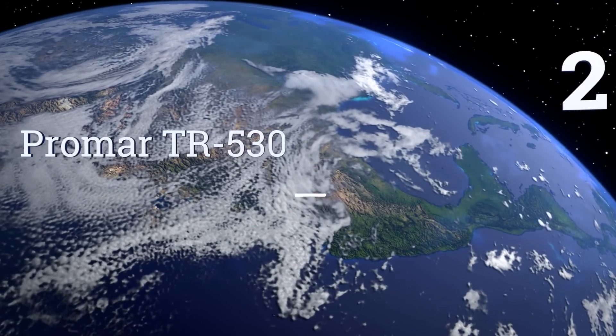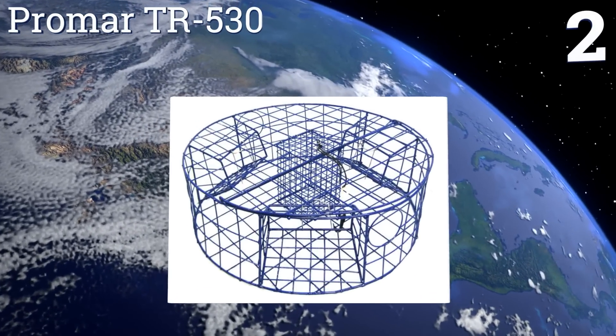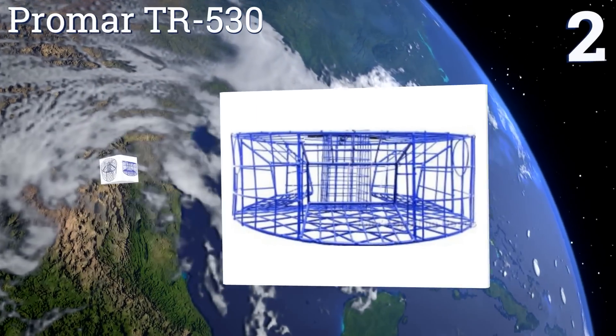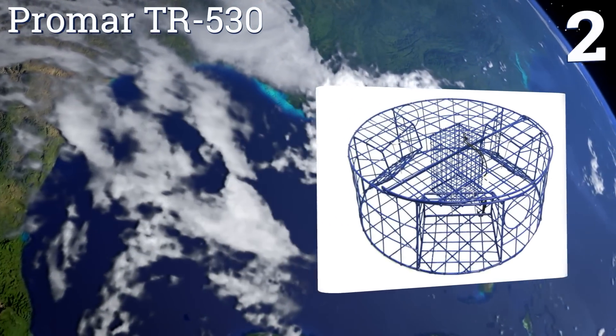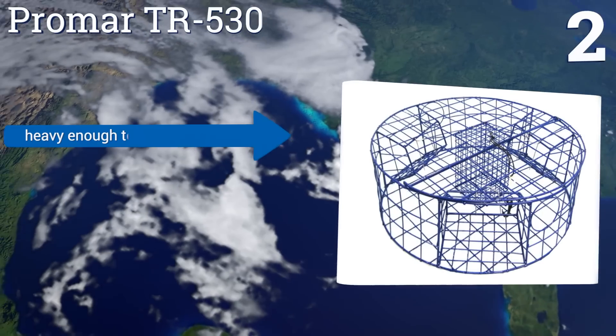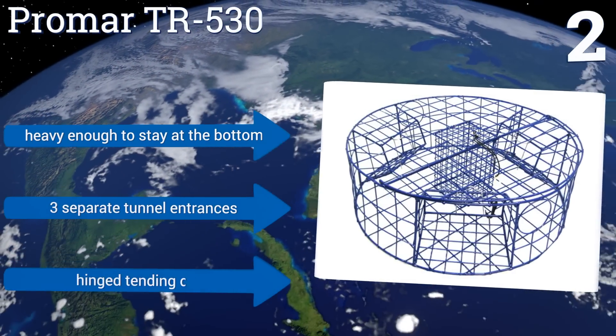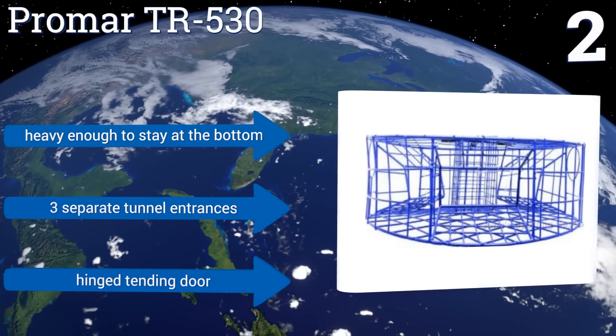At number two, if you're trying to catch Dungeness, the Promar TR530 is a great trap. It has a built-in internal bait box that will lure crabs while keeping the meat safe from other predators. It also has a plastic coating that will prevent rusting. It's heavy enough to stay at the bottom and features three separate tunnel entrances and a hinged tending door.